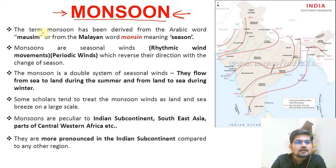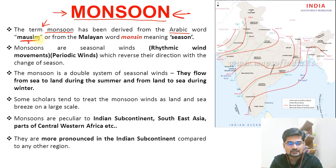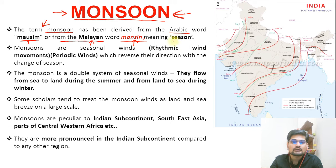This term is basically derived from the Arabic word 'Mossim.' We have already talked about Arab geographers and their contribution to geographical thought. So it was called Mossim, meaning weather and climate. The other word for this is 'Monsin' — M-O-N-S-I-N — which is in the Malayan language, from the Malaysian region, basically meaning 'the season.' So this is the basic origin of the word.